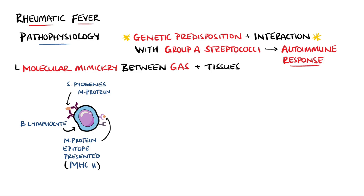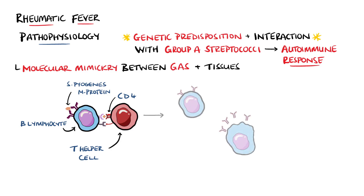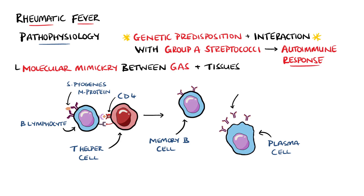Specifically, epitopes from Streptococcus pyogenes' cell wall include the M protein. Antigen-presenting cells such as B lymphocytes will present the antigen to CD4 T helper cells, which then activate the B cells to become memory B cells and eventually plasma cells. These then produce antibodies against the M protein antigen.